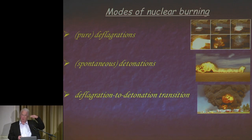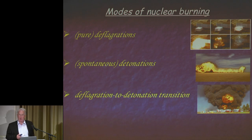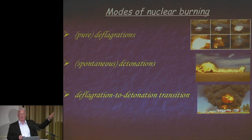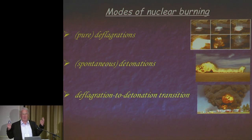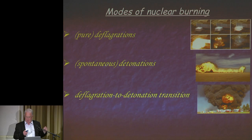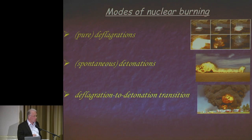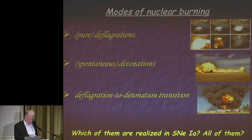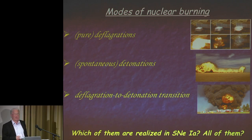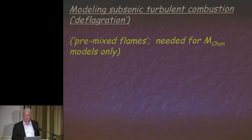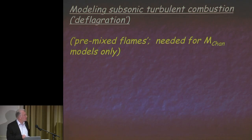The physics we are discussing is, in contrast to what we learned about core collapse, pretty well under control—because that's exactly what happens on Earth. We have premixed flames, chemical flames; we are studying them for decades, centuries. We have deflagration waves—subsonic burning in the laboratory. We have spontaneous detonations occasionally. We have deflagration-to-detonation transitions from subsonic to supersonic—all of that we have in the lab. The question is which of them are realized in supernovae, and again I will argue all of them. Nature does what it can do.